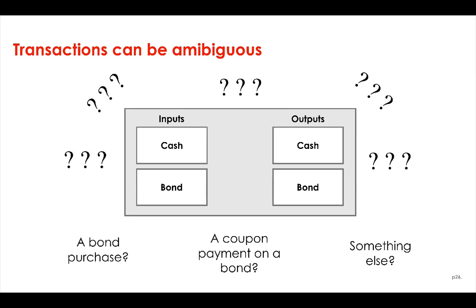Just by looking at a transaction's inputs and output states, it can be hard to tell what a transaction is doing. For example, here we see a transaction that has a cash input state, a bond input state, a cash output state, and a bond output state. We don't know what this transaction represents — it might represent the purchase of a bond, it might represent a coupon payment on a bond, or it might represent something completely different. Without further information in the transaction, there's often no way to know.